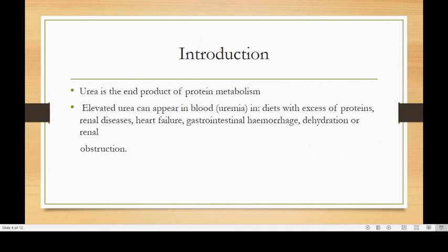Elevated urea can appear in blood, known as uremia, in cases of diet with excess protein, renal disease, heart failure, gastrointestinal hemorrhage, dehydration, or renal obstruction.